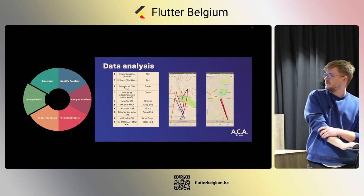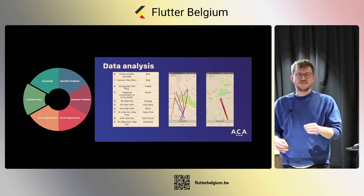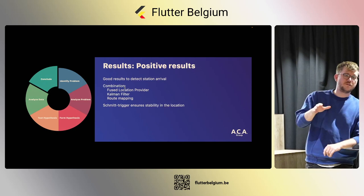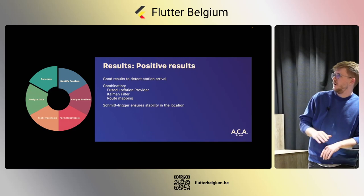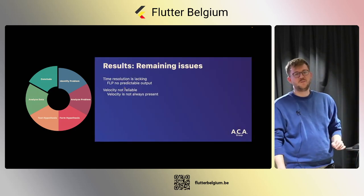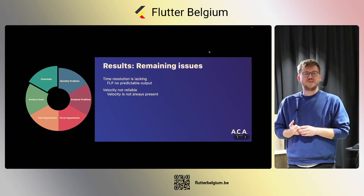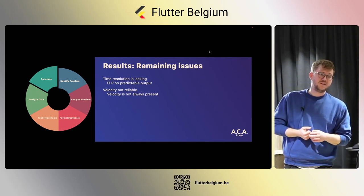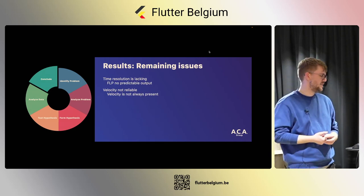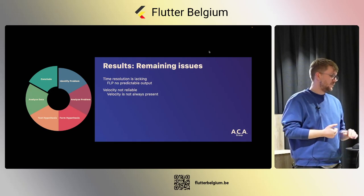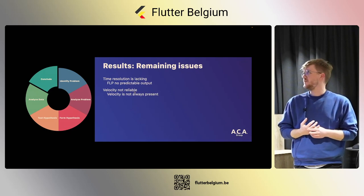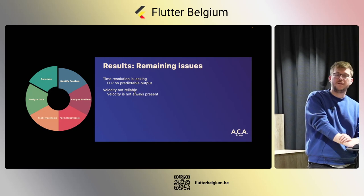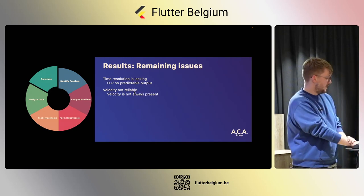I wrote the application, did some tests, and found the best combination of filters. The results were very good — we could detect station arrival and it was very stable, with the Schmitt trigger ensuring stability. However, there were remaining issues. Our original research question required very good time resolution, and sometimes you don't get any GPS data until the train guard leaves the train. The velocity we depended on was totally unreliable — at times I had it constantly, at times not for hours — so we couldn't use velocity from the Fused Location Provider. Back to the drawing board.